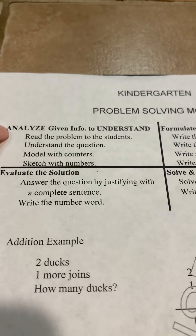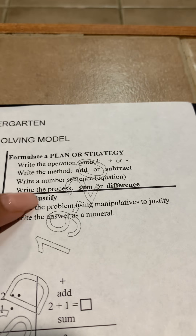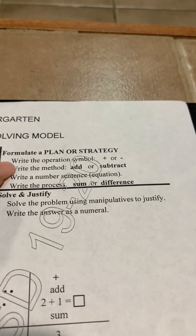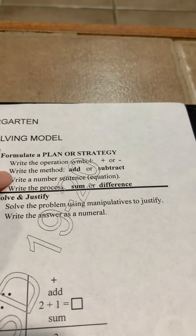Once we do that, we go to the right and formulate a plan or strategy. That means we write the operation, which is a symbol — the plus or minus sign. In this case we're adding. We write the method, which is add or subtract. We write a number sentence or equation. And we write the process: did we find the sum or the difference?